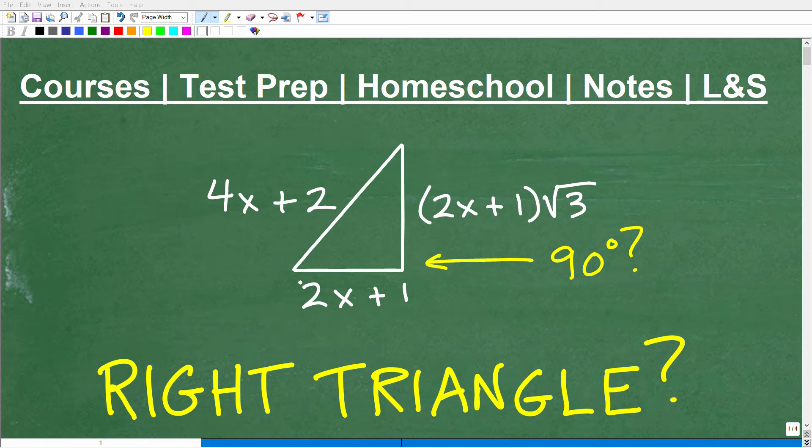Okay, so what do we have here? Well, obviously we have a triangle, and the question is, is this a right triangle? So in other words, is one of the angles, this angle right here, 90 degrees?